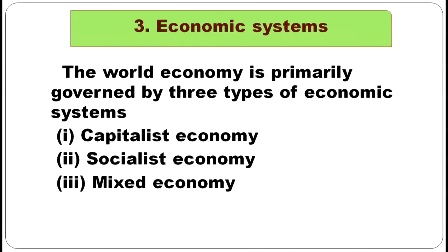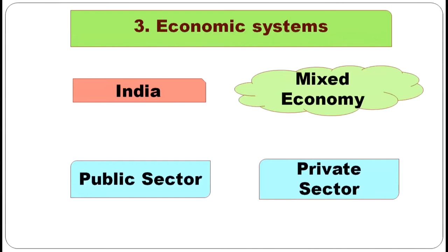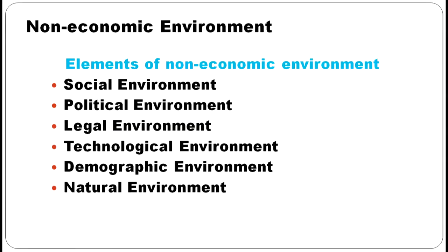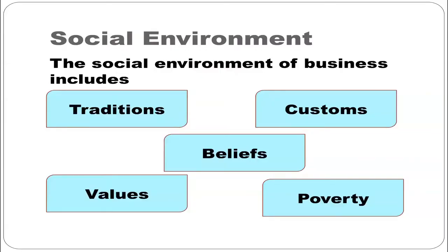Coming to economic systems — the world economy is governed by three types of economic systems: capitalist economy, socialist economy, and mixed economy. In the case of India, we have a mixed economy, meaning there is coexistence of the public sector and private sector, and both can function. Elements of non-economic environment include social environment, political environment, legal environment, technological environment, demographic environment, and natural environment. Social environment of business includes traditions, customs, beliefs, values, and poverty prevailing in that particular society.